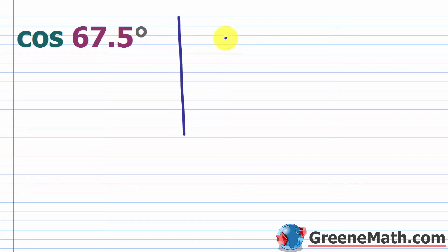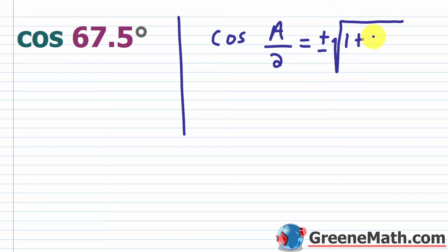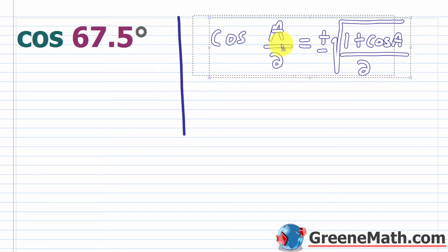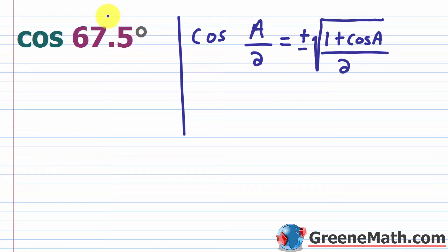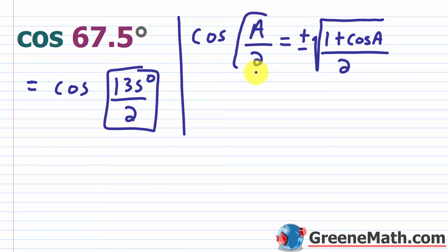The first problem asks us to find the cosine of 67.5 degrees. Let me put my identity off to the side: the cosine of A over 2 equals plus or minus the square root of 1 plus the cosine of A, all over 2. If I want to write 67.5 degrees as some angle over 2, I first multiply by 2: 67.5 times 2 gives me 135. So this is equal to the cosine of 135 degrees over 2, which matches my identity format.